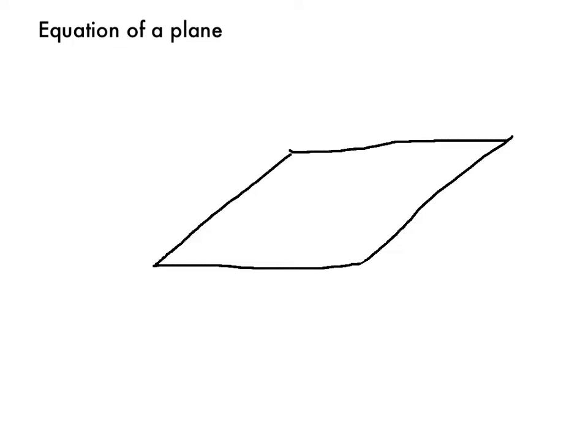We're going to try to find the equation of a plane, and it's a little different from the equation of a line. As you can see, I've drawn a plane here — or at least what we use to represent them — and there are an infinite number of vectors in the plane. Unlike a line, we can't really use a vector in the plane to define the plane, because they're all in the plane but there are so many of them and they don't really have a relationship to each other other than being in the plane.